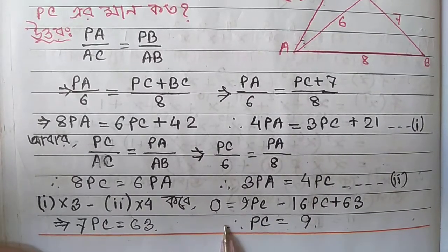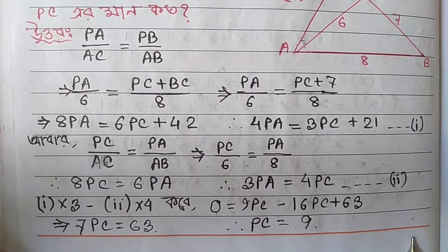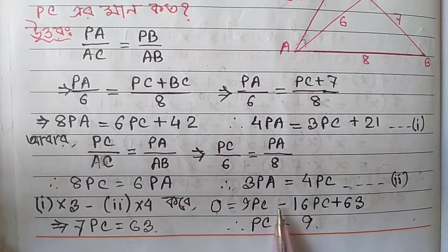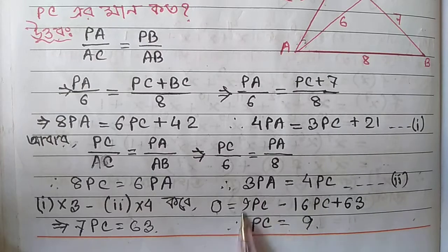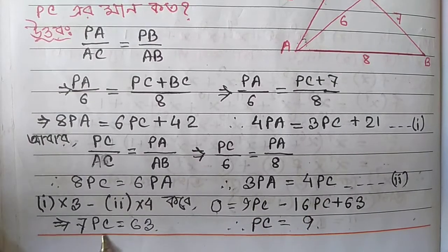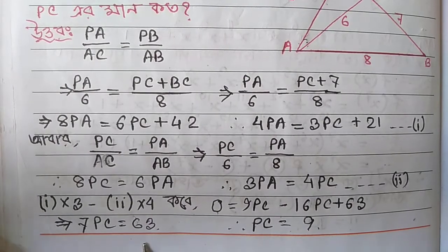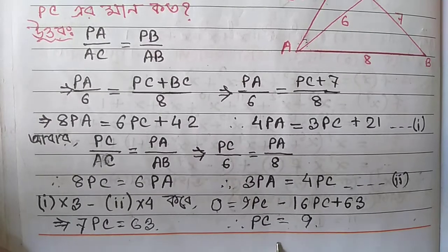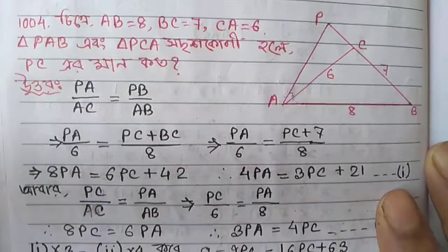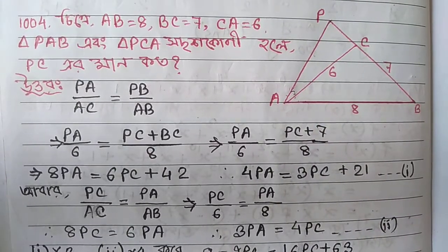0 equals 9PC minus 16PC plus 63, so minus 9PC minus 16PC plus 7PC equals 63. Then minus 14PC minus 7PC plus 1PC minus 6PC minus 9PC minus 7PC minus 8PC gives minus 25PC minus 10P plus 9PC minus 10P.